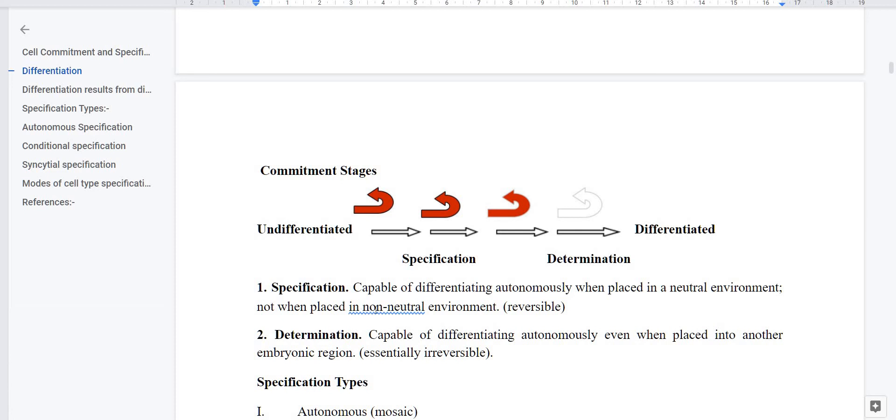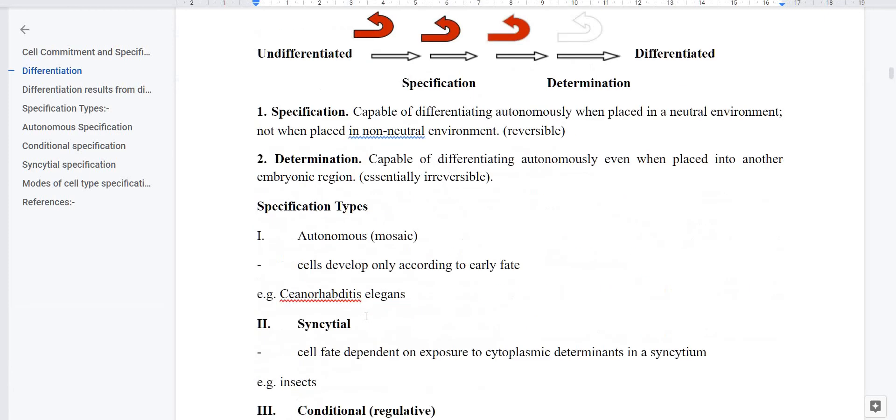What is specification? It can revert back in a reversible environment. Determination is capable of differentiating autonomously even when placed into another embryonic region. You don't have to take the environment into account. In specification, environment is playing a role. In determination, there is no role play. So we have learned, students, when cell differentiation occurs, first step is specification, second is determination. In both there is commitment, and then differentiation.